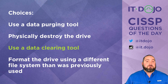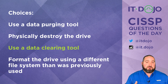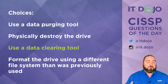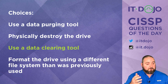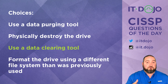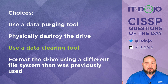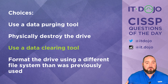Physical destruction is option four. When you think about what to do with a disk, if it contained particularly sensitive information, a lot of organizations compare the sensitivity of the data to the cost of new media and decide it's not worth the risk of discussion — so they just physically destroy it and start with a brand new disk.